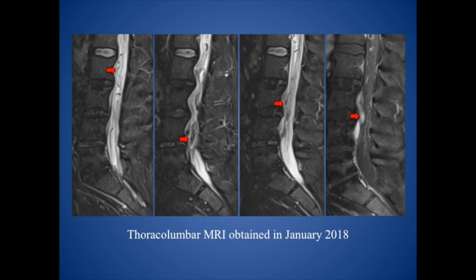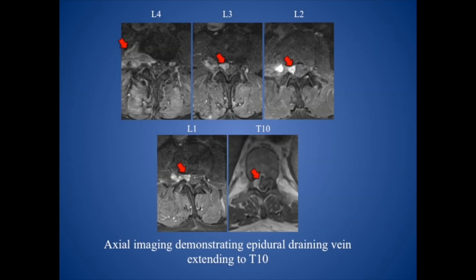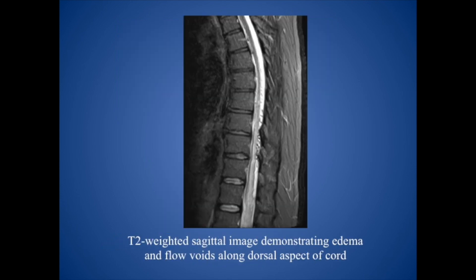This is the recent lumbar MRI when he originally presented to us. You can see the serpentine vessels around the nerve roots and cauda equina, suggesting the presence of a fistula. Multiple axial views demonstrate a really large epidural vein coming from the L4-5 foramen and causing mass effect on the cauda equina. MRI of the thoracic spine shows some abnormal vessels on the dorsal aspect of the spinal cord, and you can also observe edema extending up to the mid-thoracic portion of the spinal cord.